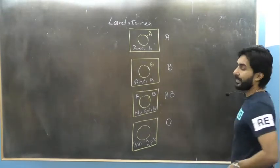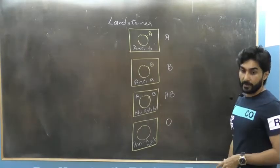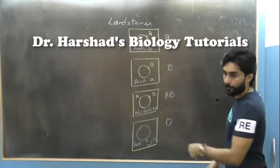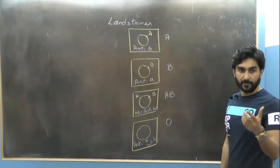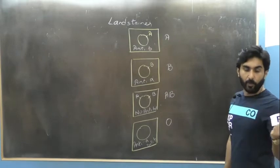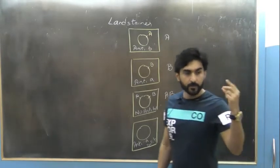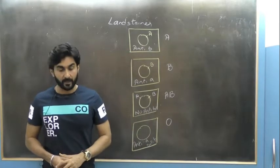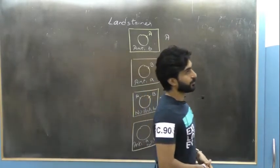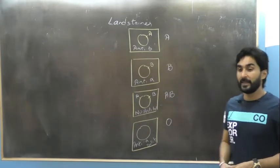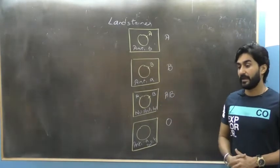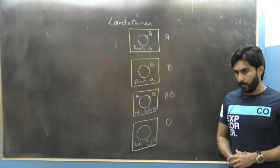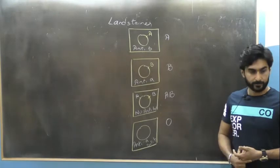Based on the antigen on the RBC, blood is classified into four groups: A (antigen A, anti-B), B (antigen B, anti-A), AB (antigens A and B, no antibodies), and O (no antigen, both anti-A and anti-B). The AB blood group was later discovered by De Castello and Sturley, which is why three groups — A, B, and O — were initially described by Landsteiner.